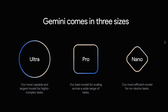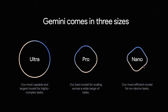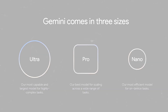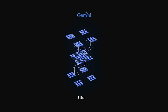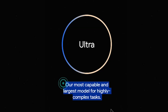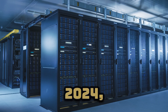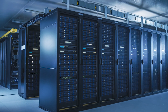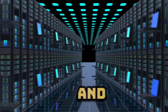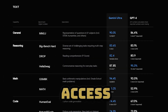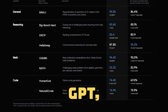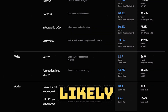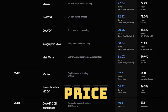Google has developed three versions of Gemini, each with a distinct set of skills. The largest, Ultra, is designed to tackle complex tasks. By 2024, it will run on their cloud servers, and you'll be able to access the API in a manner similar to ChatGPT, most likely at a similar price point.